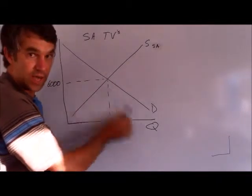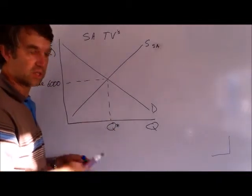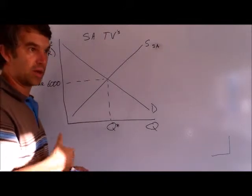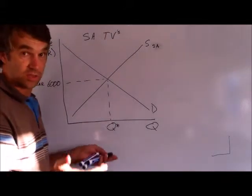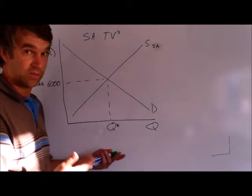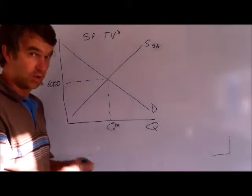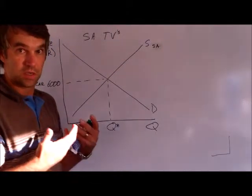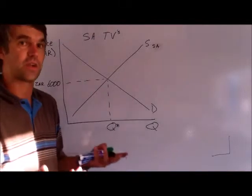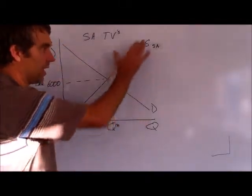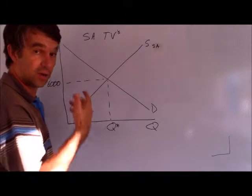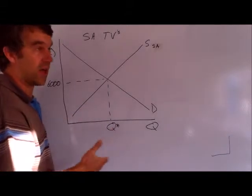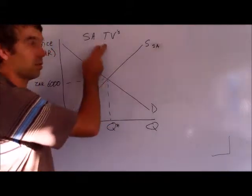Likewise, these demanders are South African demanders of TVs. It doesn't really matter if somebody in Zimbabwe wants to come down and buy a TV in South Africa. If so, they're part of the South African demand for TVs, the South African market. So these two lines are people who live inside or consume and produce inside of South Africa, inside of the market that you're looking at.